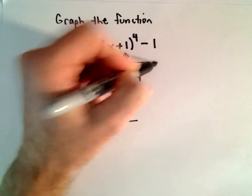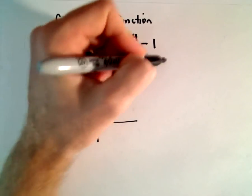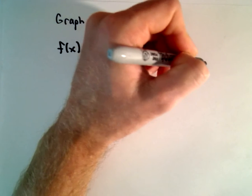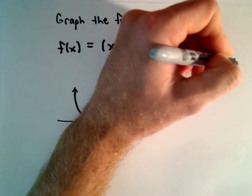The +1 inside the parentheses is going to shift our graph of x^4. It's going to shift the graph one unit left.